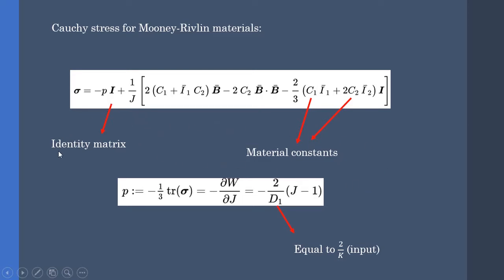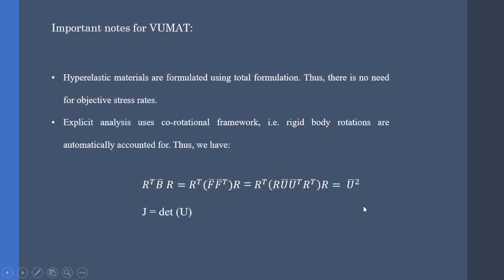As you can see, I is the identity matrix, C1 and C2 are material constants, and p is equal to a relation in which J is the determinant of the deformation gradient and D1 is the material constant, which is equal to 2 divided by K, where K is the bulk modulus.